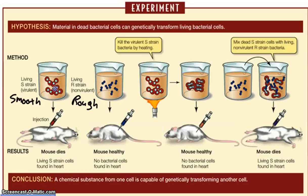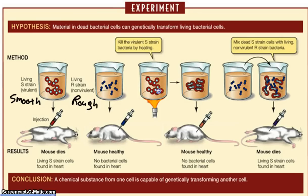He took this living S strain and boiled them. We know that boiling is a good way to sanitize water — say when backpacking or camping. Boiling sanitizes because it denatures the proteins, which just means it changes the shape of the proteins, and it lyses the cells, which just means the cells explode. So they're no longer full, intact cells.